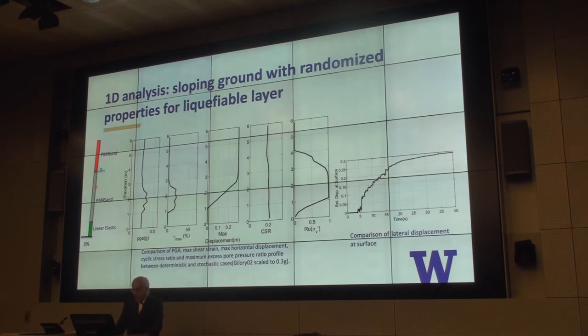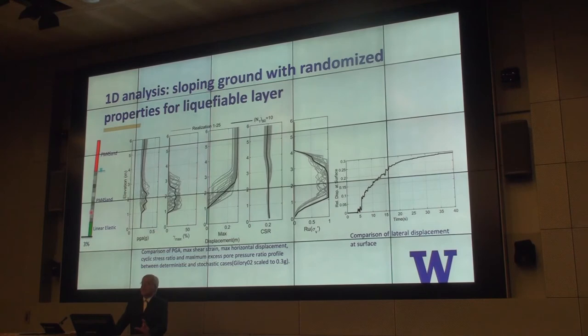I can consider that I have a homogeneous liquefiable layer. What if I randomize the properties here? So what you have here in black are the response for the homogeneous layer. What if I randomize the properties, like relative density, so that I capture some spatial variability. And now we can start doing some analysis here and see what's the effect of having a random field in the response, not only in the profiles along the depth, but also in the maximum displacement that you obtain at the surface. These are things that now I have some confidence. That's one route that I can go.